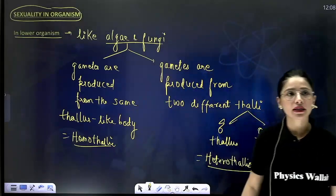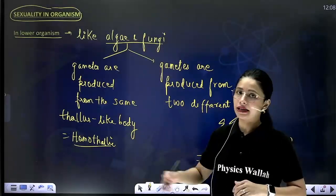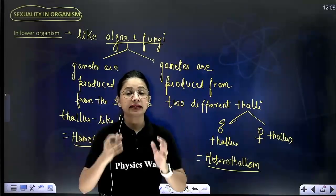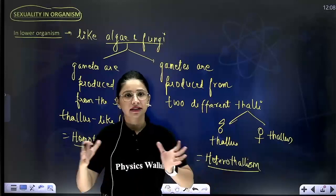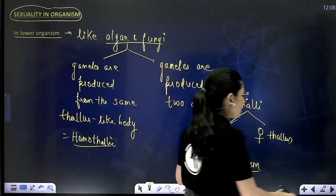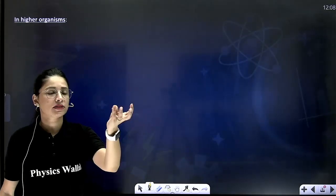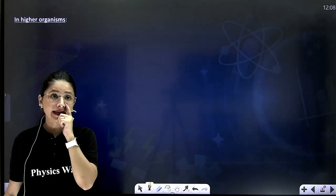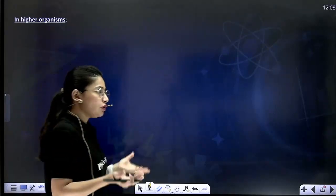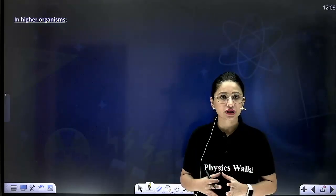If we talk about sexuality in higher organisms, the terminology used is monoecious, dioecious, bisexuality, and unisexuality. In higher organisms, specifically angiosperms, which are flowering plants, they produce a specific sex organ for reproduction - that is flowers. Suppose a flower is having both sex organs, that is the male reproductive organ as well as the female reproductive organ, such that one flower is itself producing both male and female gametes, then that condition is known as bisexual.